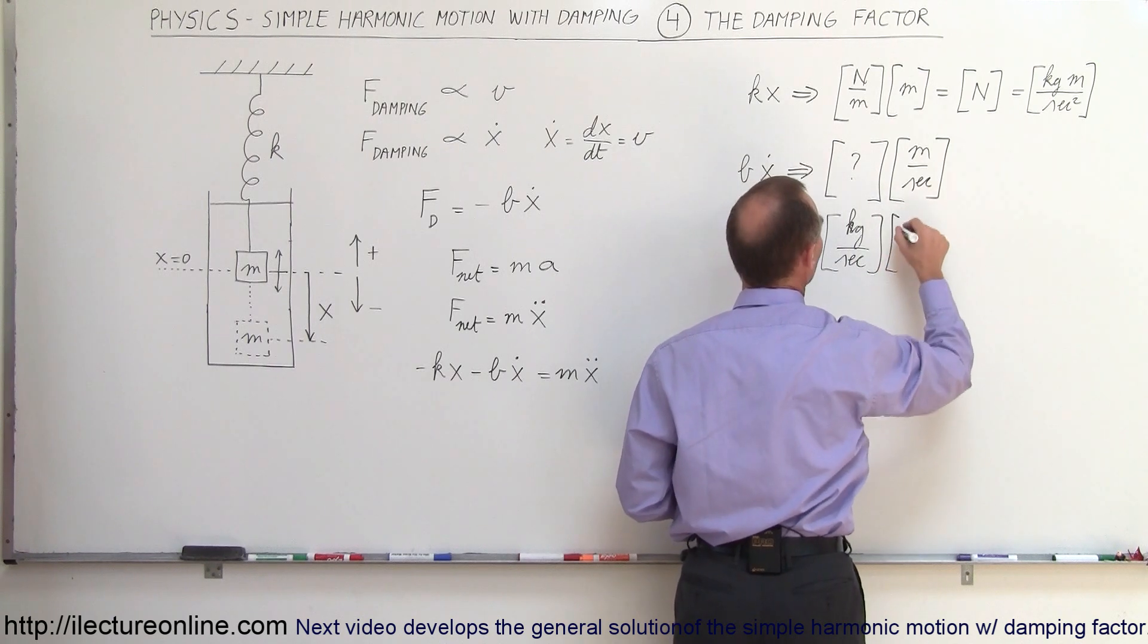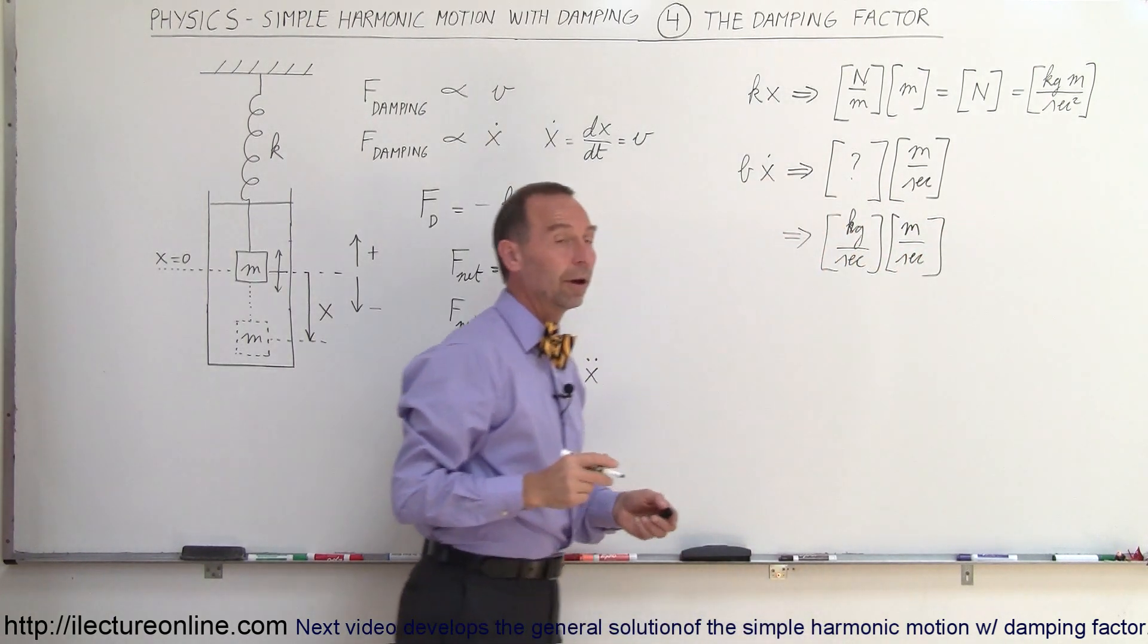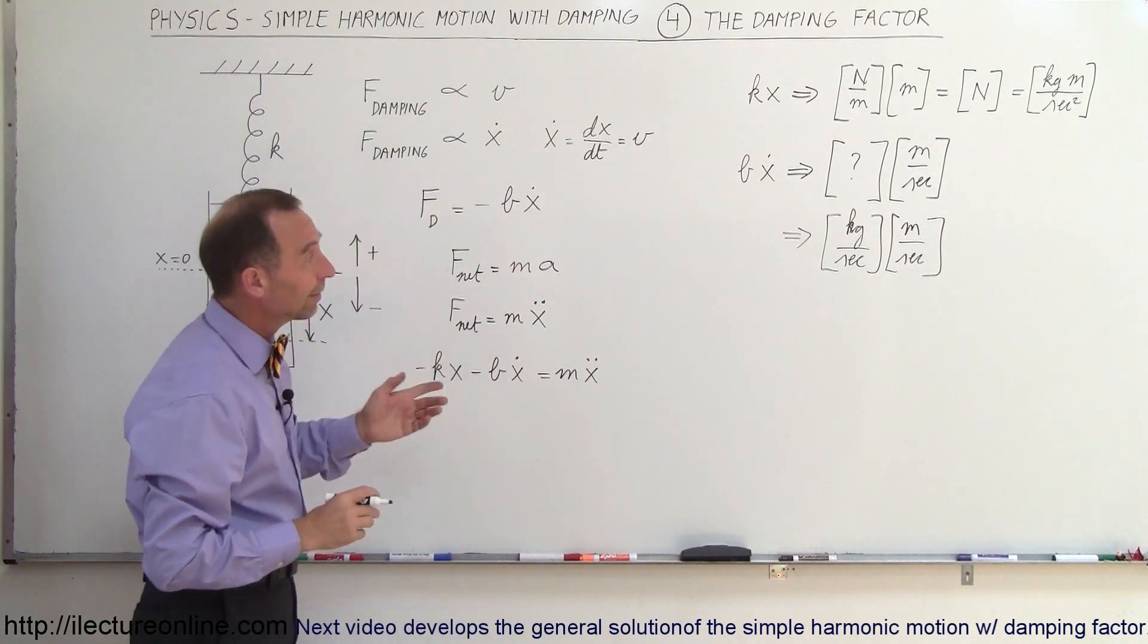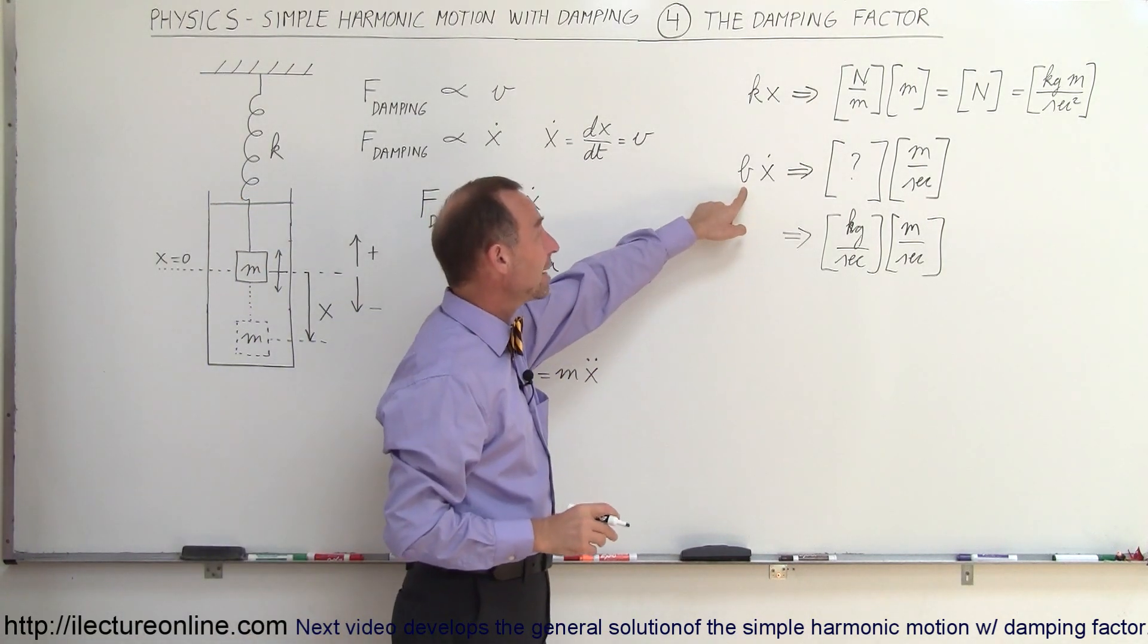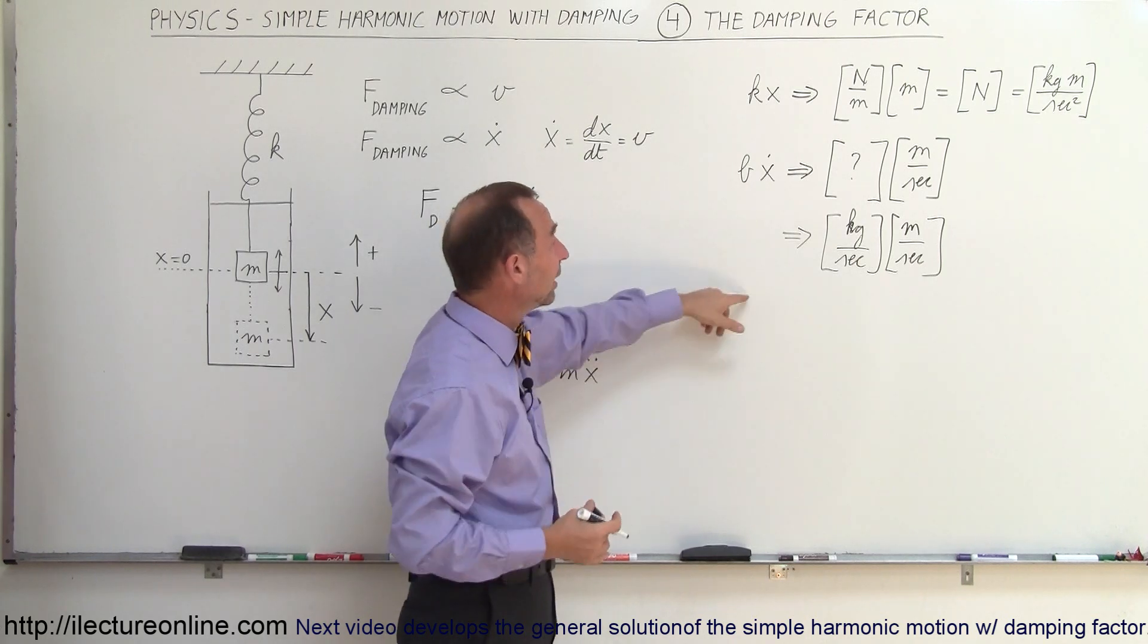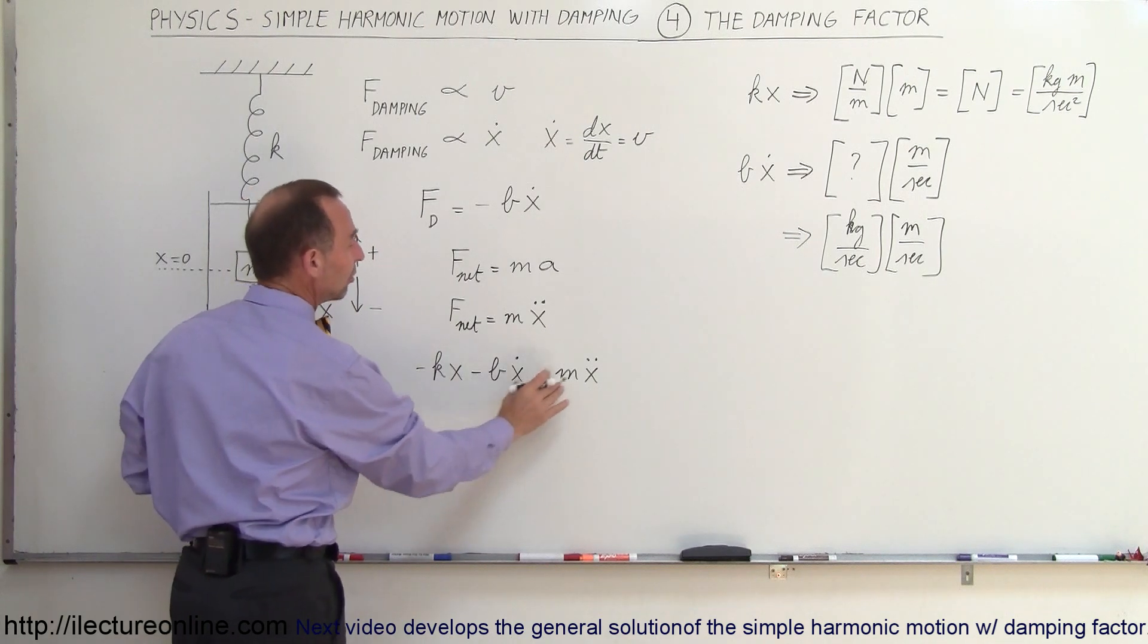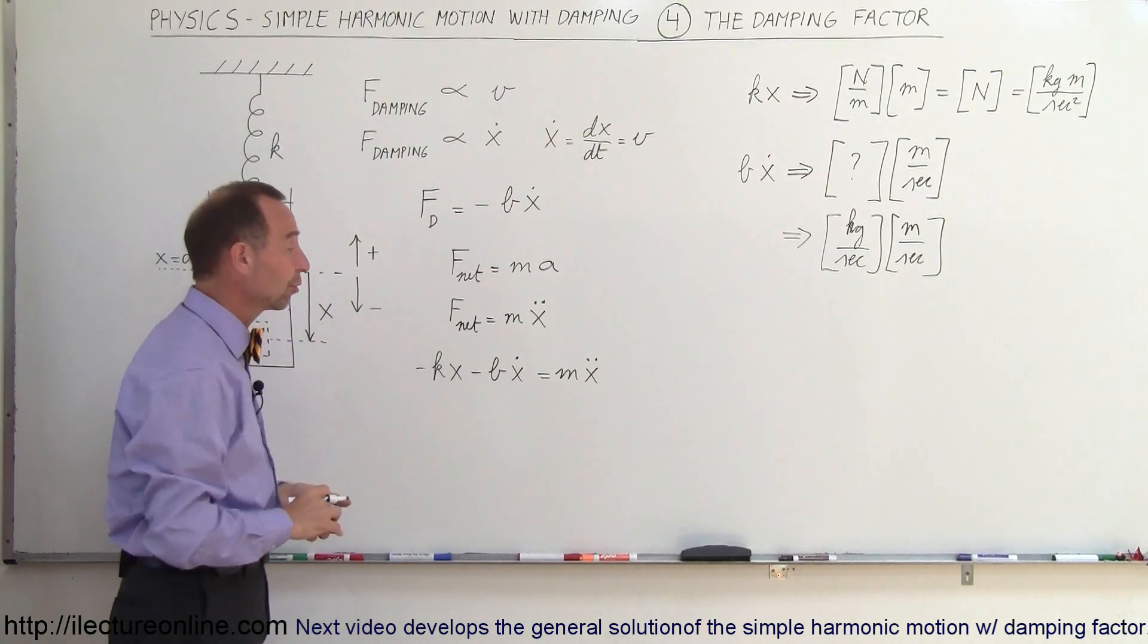Times meters per second, which gives us units for force. So that determines that the units for b, that constant representing the viscosity or the resistance of the fluid, is equal to kilograms per second. So now we know that each of these terms will be definitely expressed in terms of Newtons.